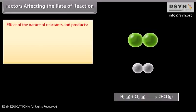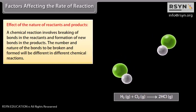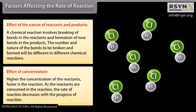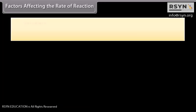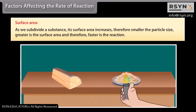Factors affecting the rate of a reaction: Effect of the nature of reactants — a chemical reaction involves breaking of bonds in the reactants and formation of new bonds in the products; the number and nature of bonds to be broken and formed differ in different reactions. Effect of concentration — higher the concentration of the reactants, faster is the reaction; as reactants are consumed, the rate decreases with the progress of reaction. Surface area — smaller the particle size, greater the surface area and therefore faster is the reaction.